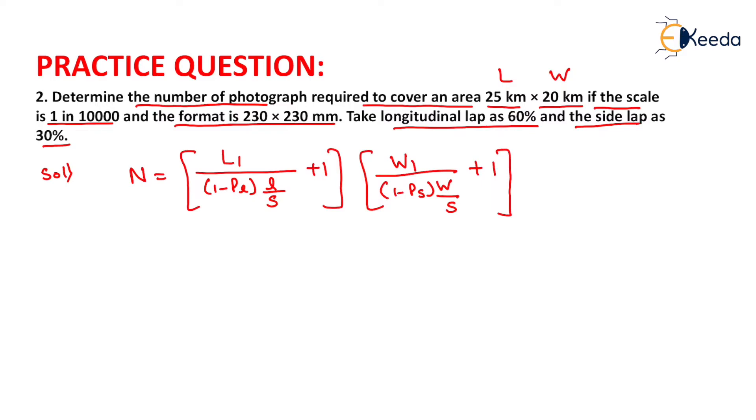So on putting the value of L1 and PL here, the value of L1 will be equals to 25 kilometers. So we will convert this in meters, that is 25 into 10 to the power 3 upon 1 minus PL that is 0.6 into length of photograph. It will be equals to 0.23 and the scale of photograph will be 10 to the power minus 4 because of 1 by 10,000 plus 1.